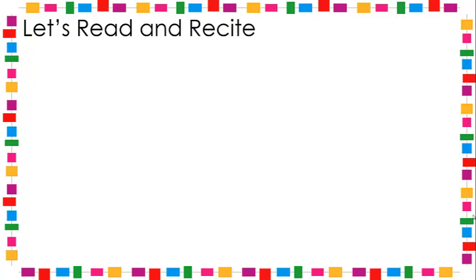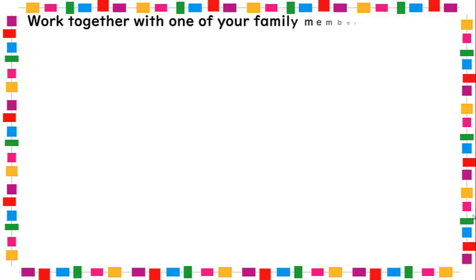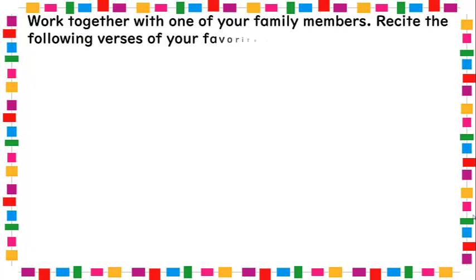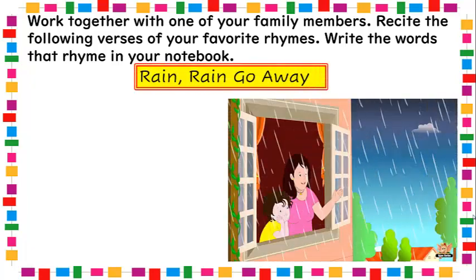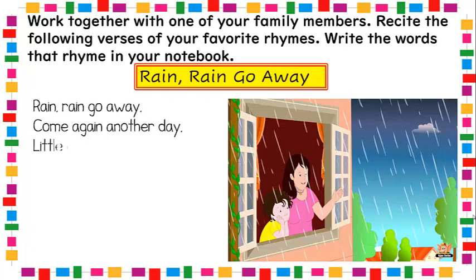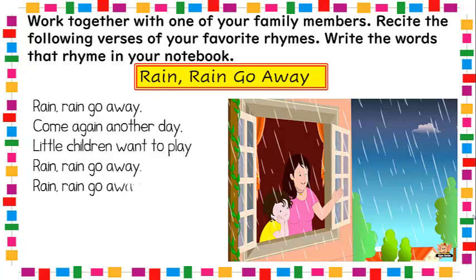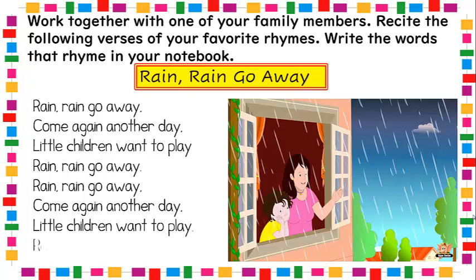Let's read and recite some more. Work together with one of your family members. Recite the following verses of your favorite rhymes, then write the words that rhyme. Rain, rain, go away. Come again another day. Little children want to play. Rain, rain, go away. Come again another day. Little children want to play. Little children want to play. Rain, rain, go away.